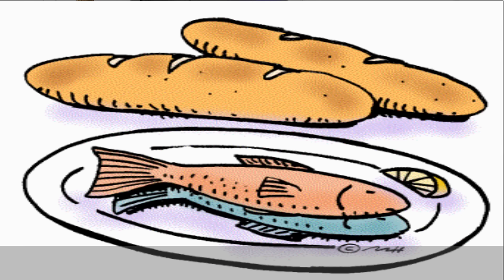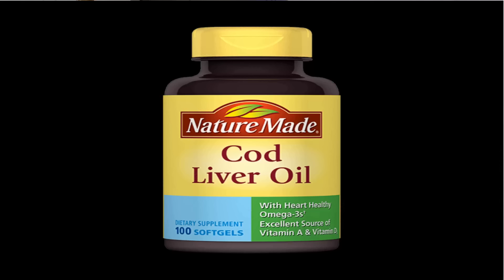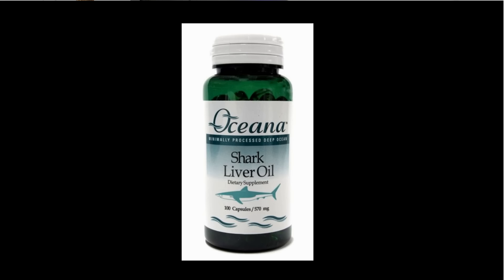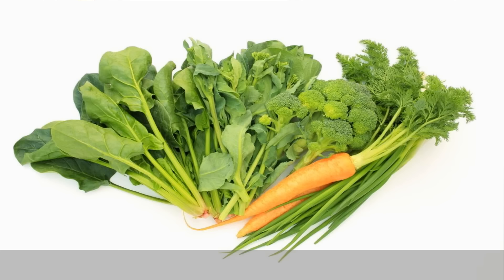Animal origin sources of vitamin A include whole milk, butter, egg, fish, meat, liver, cod liver oil, and shark liver oil.